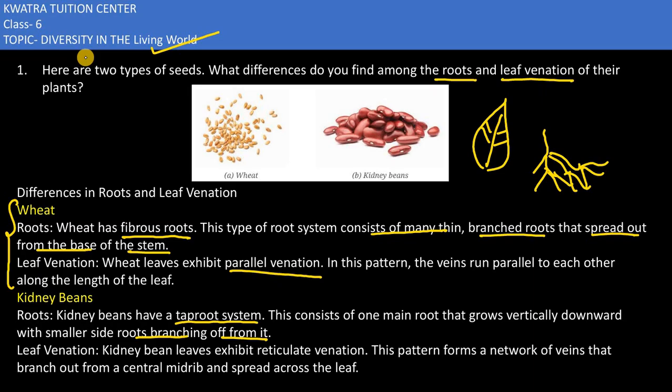What happens in the leaf venation of kidney beans? They have reticulate venation. That means there would be a network of veins that branch out from a central midrib and spread across the leaves.